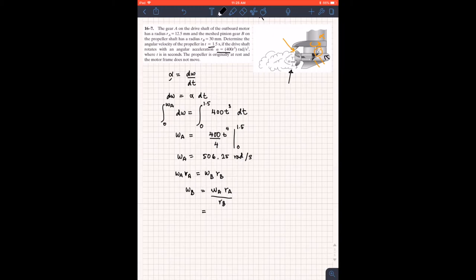So when we finish to calculate this one you are going to have 506.25, and then the radius of A equals to 12.5 divided by radius of B equals to 30 mm. So ultimately you are going to have the angular velocity of B equals to 211 rad/s.